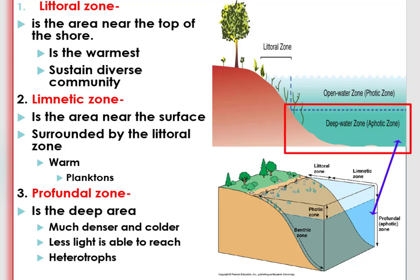The third layer is the profundal zone, also called the deep water or aphotic zone. This is the deep area of ponds or lakes. The profundal zone is much denser and colder due to the pressure and weight of the above water layers. This zone receives less light, meaning less light is able to reach this zone since it is deep and distant from the top. The profundal zone is mostly occupied by heterotrophic fauna due to less penetration of light.